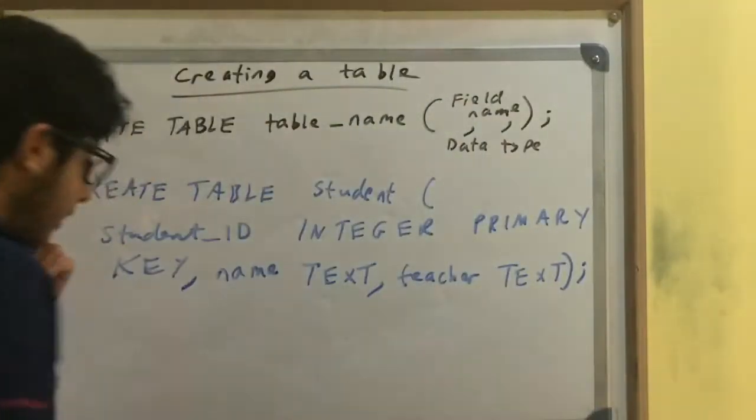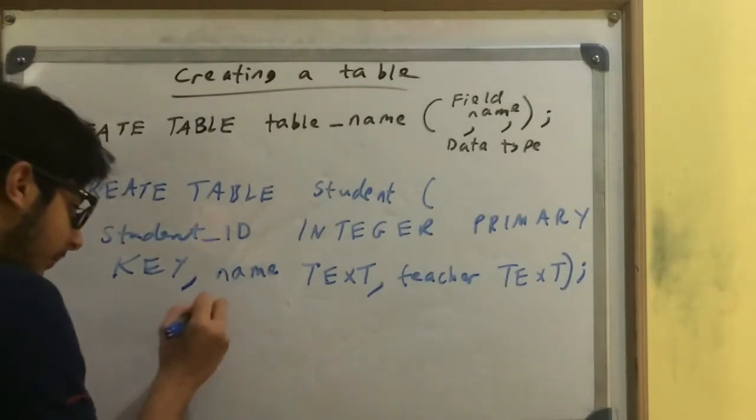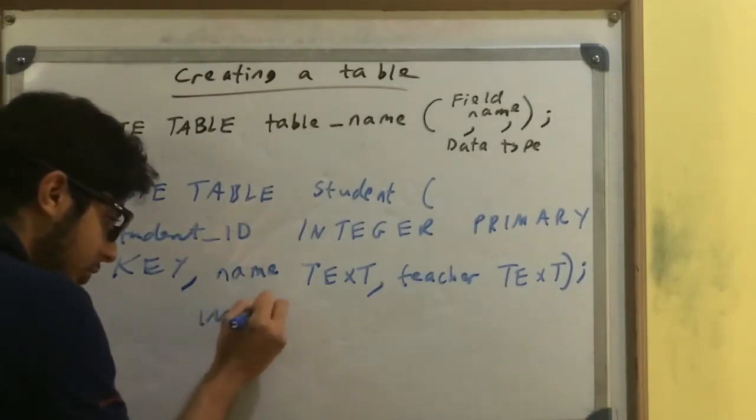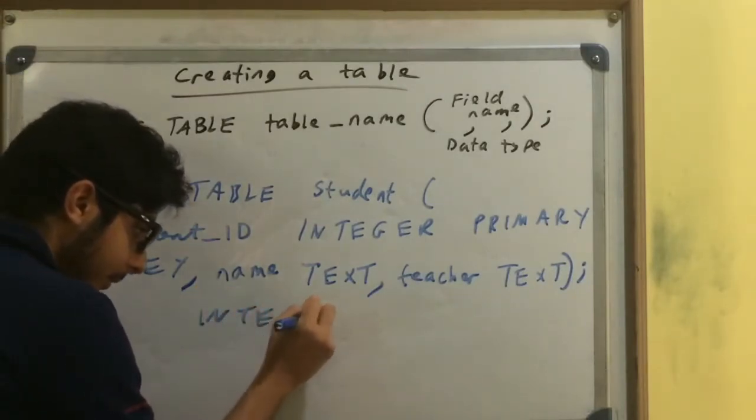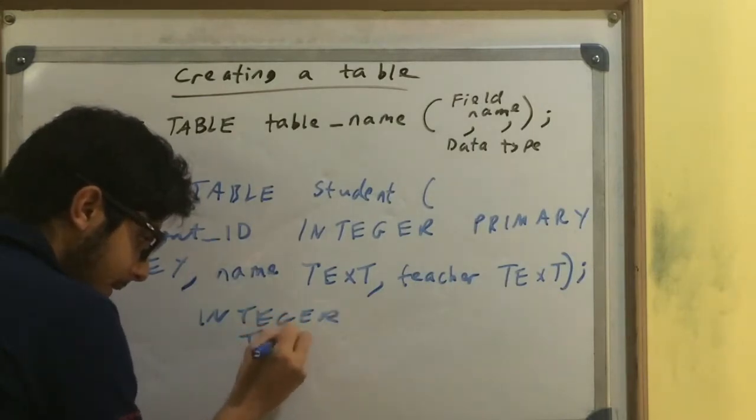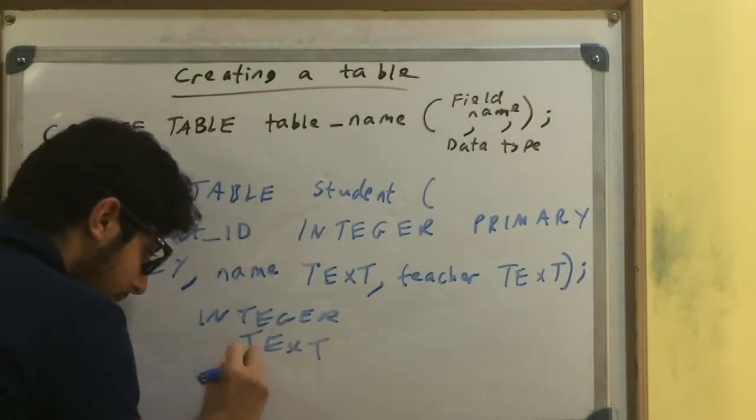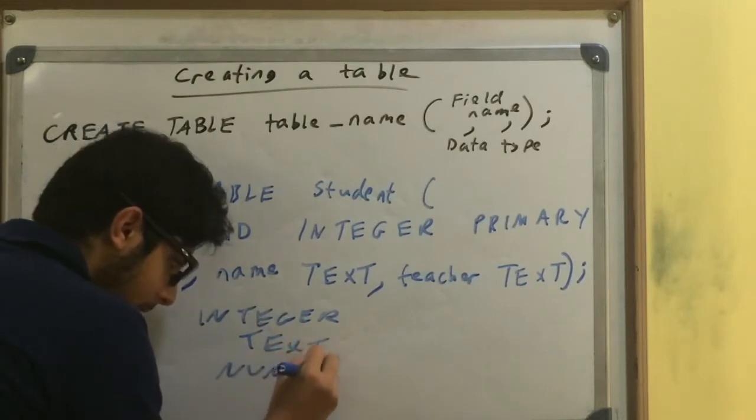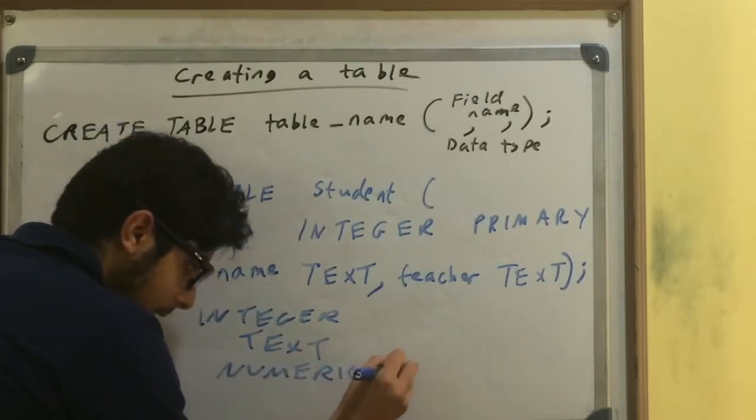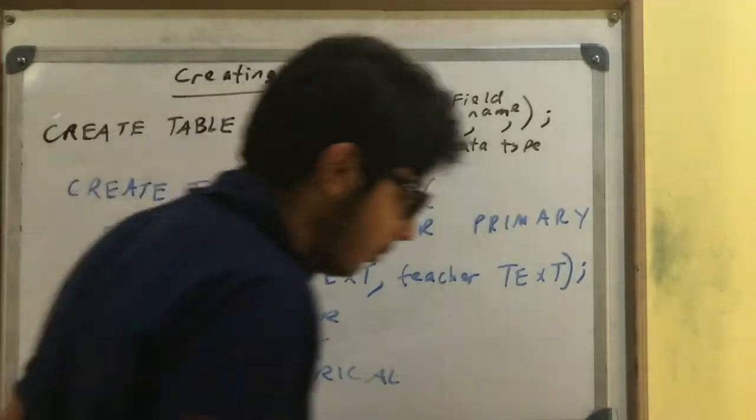Now you've got the main data types for SQL. You have integer, you have text, you have numerical, which will allow you to put in a decimal.